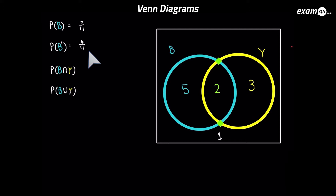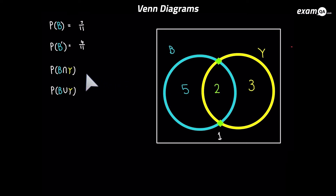Now let's try B and Y. B and Y, if you remember correctly, is the intersection — the space where it's both B and Y at the same time, and that's the 2 there. That 2 belongs to B and it also belongs to Y. So it's going to be 2 over the total, which is 11.